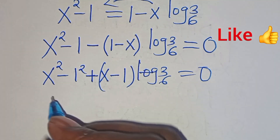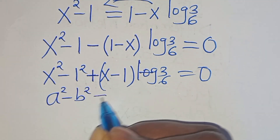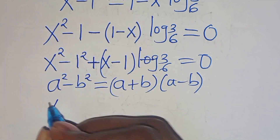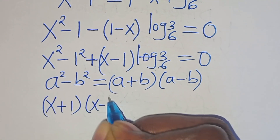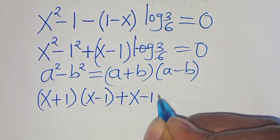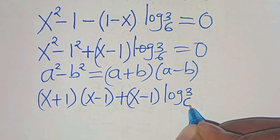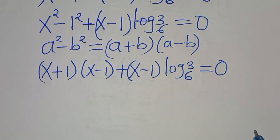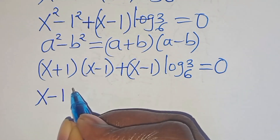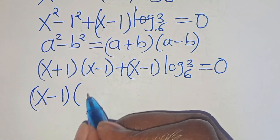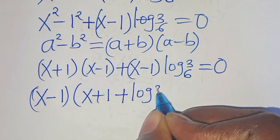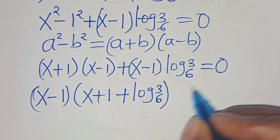Now x squared minus 1 is in the form of a difference of two squares, which we can express as a plus b times a minus b. So here we have x plus 1 times x minus 1, plus x minus 1 times log 3 to base 6, equal to 0. This implies that x minus 1 is common, so we can factor out x minus 1, giving x minus 1 times the quantity x plus 1 plus log 3 to base 6, equal to 0.